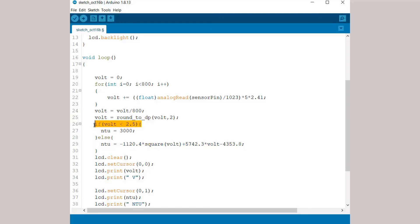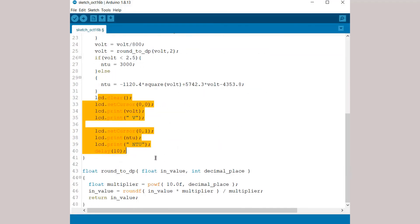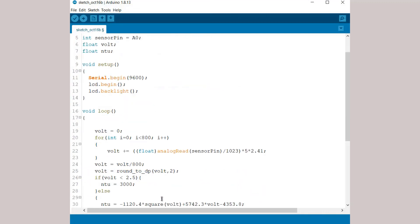If the analog voltage reading goes below 2.5V, the NTU is set to 3000. Thus, 3000 is the maximum NTU value of the project. Well, that's all for today's video. Thank you for watching.